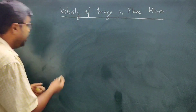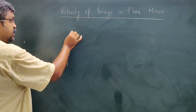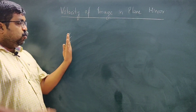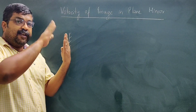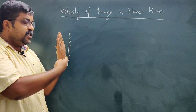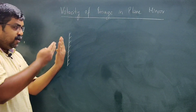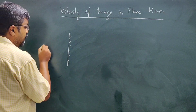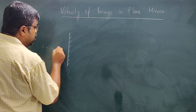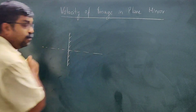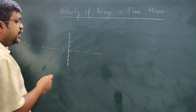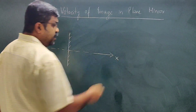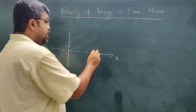Suppose we have a plane mirror. This is the reflecting surface and this is the silvered surface, so this mirror is facing this side. This line is normal to the mirror, and this is also your positive x-axis.